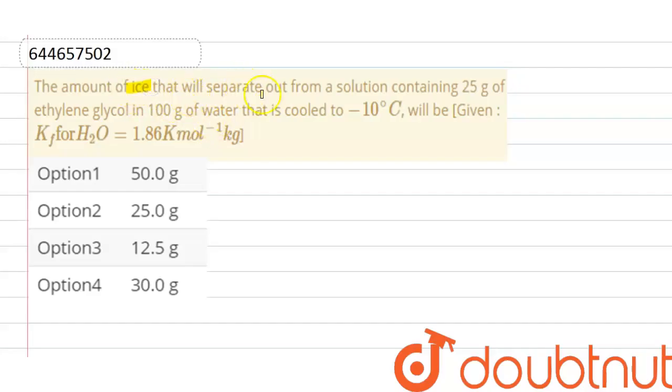The amount of ice that will separate out from a solution containing 25 gram of ethylene glycol in 100 gram of water that is cooled to minus 10 degree Celsius will be.